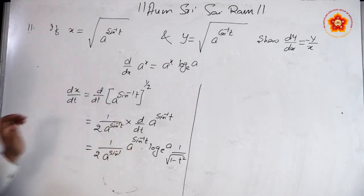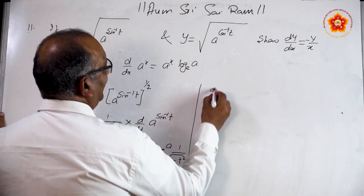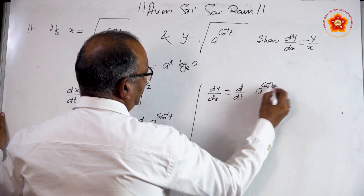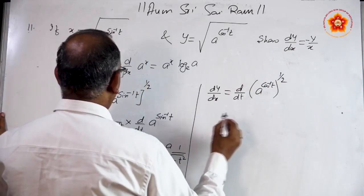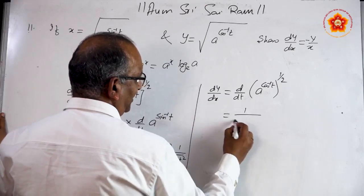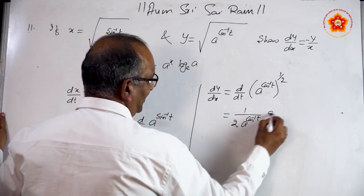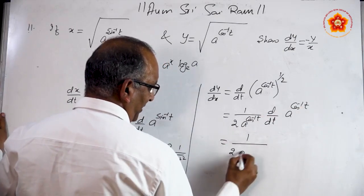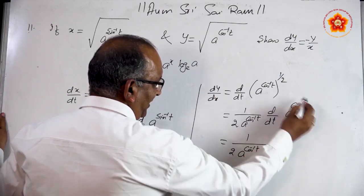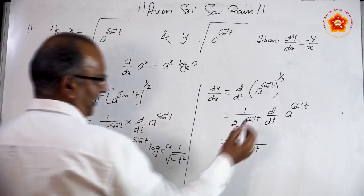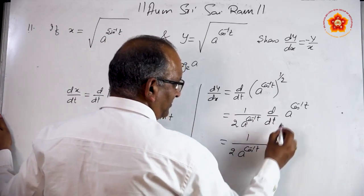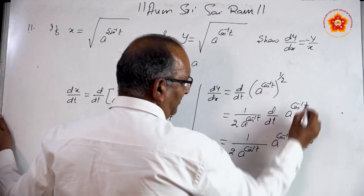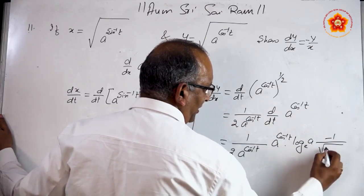The second part, dy/dt, is more or less the same. dy/dt equals d/dt of [a^(cos⁻¹t)]^(1/2). Simplifying, it becomes 1/2 · a^(cos⁻¹t) · d/dt of a^(cos⁻¹t). Taking cos⁻¹(t) as another function, the derivative of a^u is a^u · log(a). The derivative of cos⁻¹(t) is minus 1/√(1 − t²).